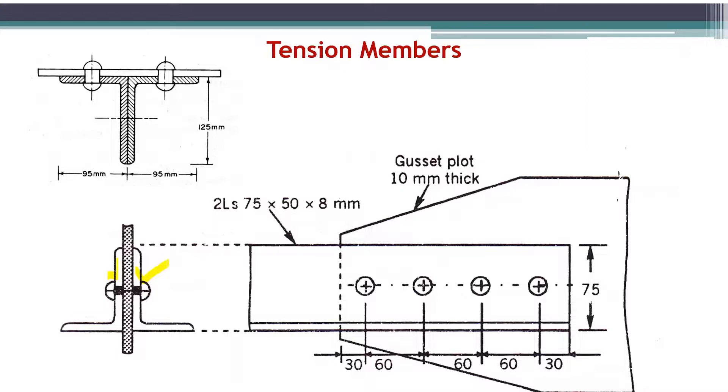When we solve the numerical, we will go through all the arrangements in tension members. The longitudinal section for that arrangement is given here. One angle is on the front side and the other angle is on the back side. That is why we have two angle sections, L section of 75 by 50 by 8 mm—one on the front and one on the back.